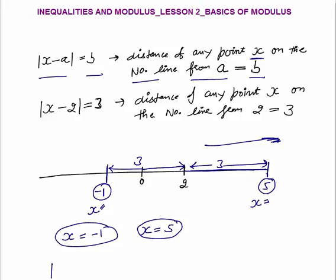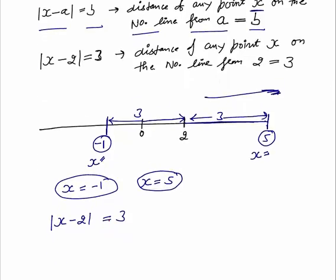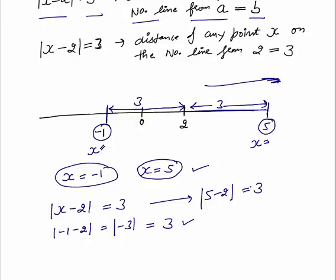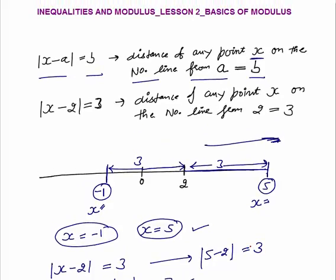We can cross-check: is modulus of X minus 2 equal to 3? Put X = minus 1: modulus of (minus 1 minus 2) = modulus of minus 3 = 3. Correct. Put X = 5: modulus of (5 minus 2) = modulus of 3 = 3. Also correct. Both values satisfy the condition.